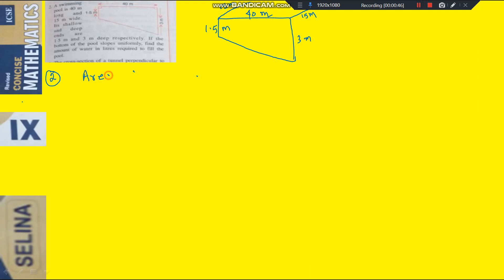So area of cross section, actually this problem you see from your book. This is Selina ICSE Mathematics class 9. So this is problem number 2. It is not visible properly, so you see from your book.